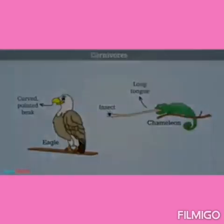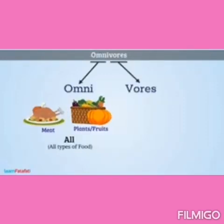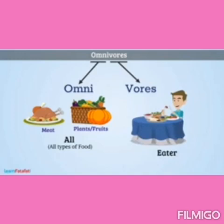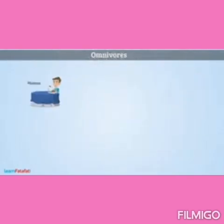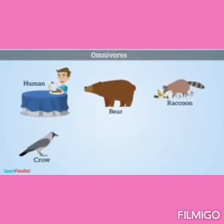Omnivores. 'Omni' means all and 'vores' means eaters. The animals which obtain their food from plants as well as other animals are called omnivores. For example, humans, bears, raccoons, crows, chickens, lizards, rats, etc.